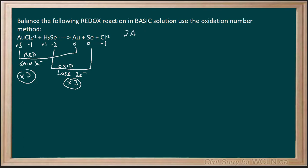When I apply that, I get 2 AuCl4 minus one plus 3 H2Se, giving us 2 Au plus 3 Se plus Cl minus one. Now, I can see there are eight chloride on the left, so I need to put an eight here on the right.